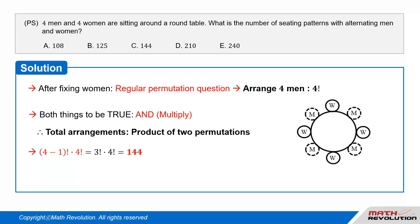So, the total arrangements of the men and women around the table will be the product of the two permutations. Factorial of 4 minus 1 times 4 factorial, which is equal to 3 factorial times 4 factorial, which is equal to 144.